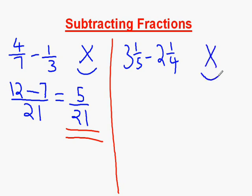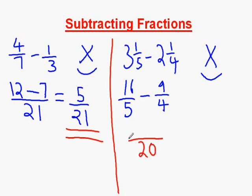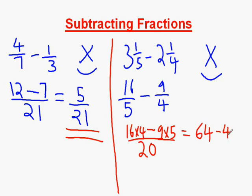First we must change to improper fractions. So 3 times 5 plus 1 gives us 16 fifths, take away 2 times 4 plus 1 which gives us 9 quarters. Now we cross multiply to get 20 as the denominator, and we do 4 times 16 take away 9 times 5, which gives us 64 take away 45 over 20, leaving us with an answer of 19 over 20.